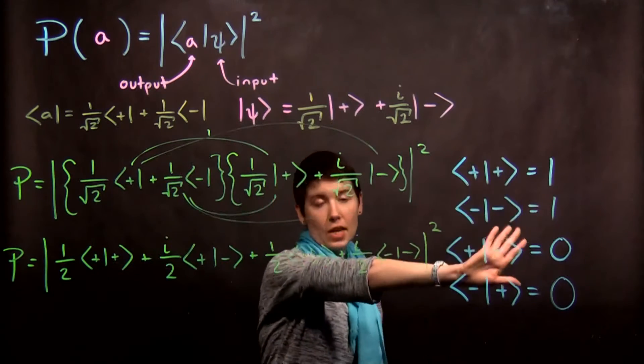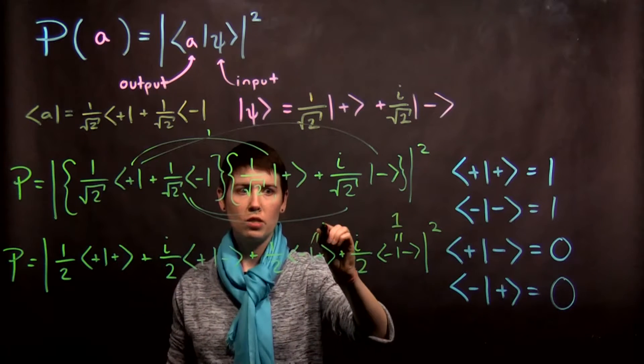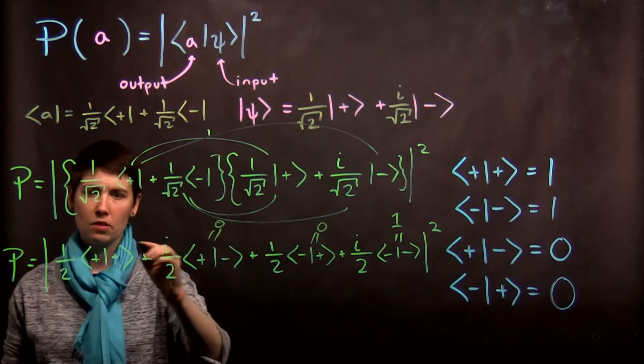So now again, we look at this table and we see that this is going to equal one. This is going to equal zero. Anytime you have a plus with a minus, it's zero.